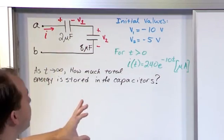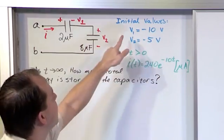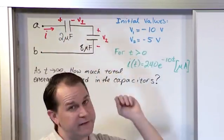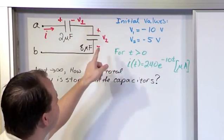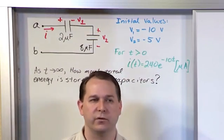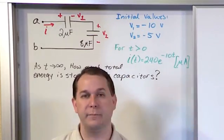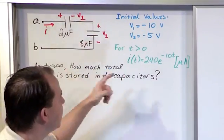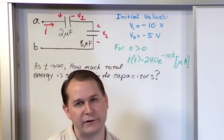Secondly, we're given some additional information. We're told that the initial values for these capacitors, the voltage V1 initially at time zero is negative 10 volts, and the voltage across V2 initially is negative 5 volts. And we're also told that when the clock starts, when we start observing the circuit at T0, as T goes bigger than zero, the current flow through this circuit is 240 times E to the minus 10T, and the unit is microamps.